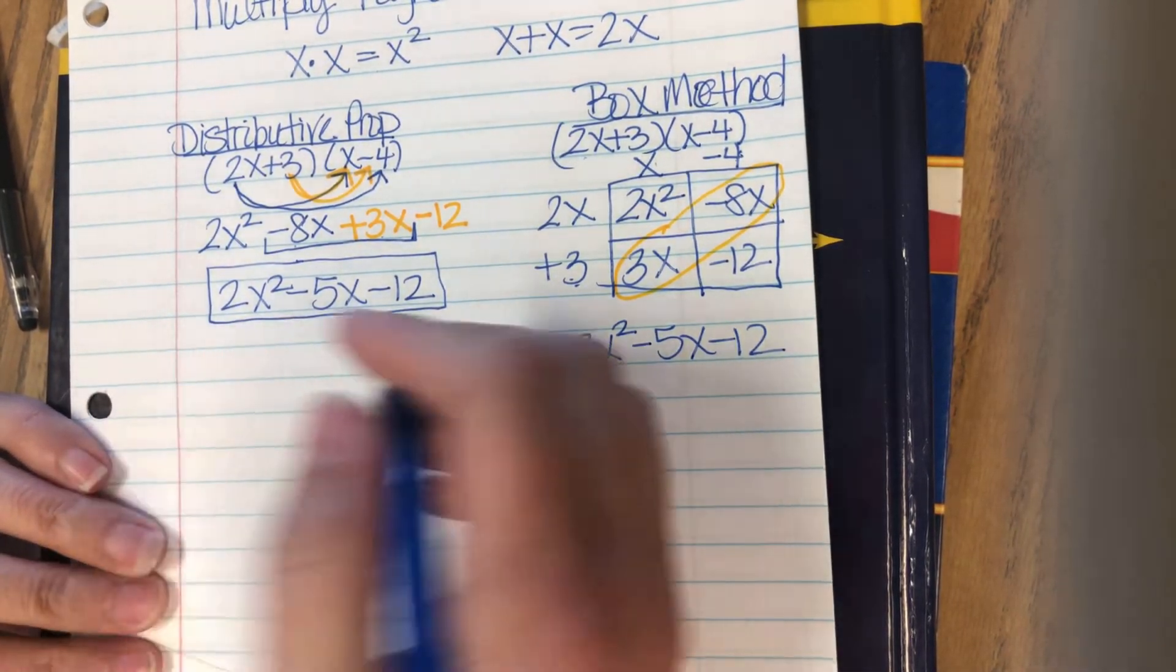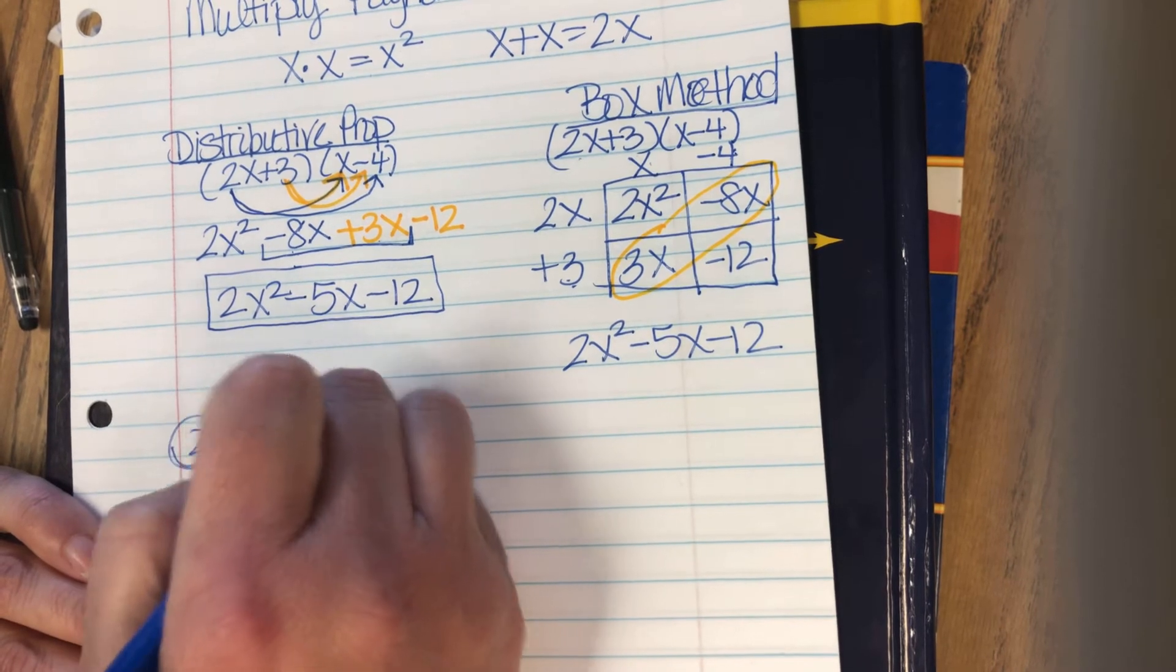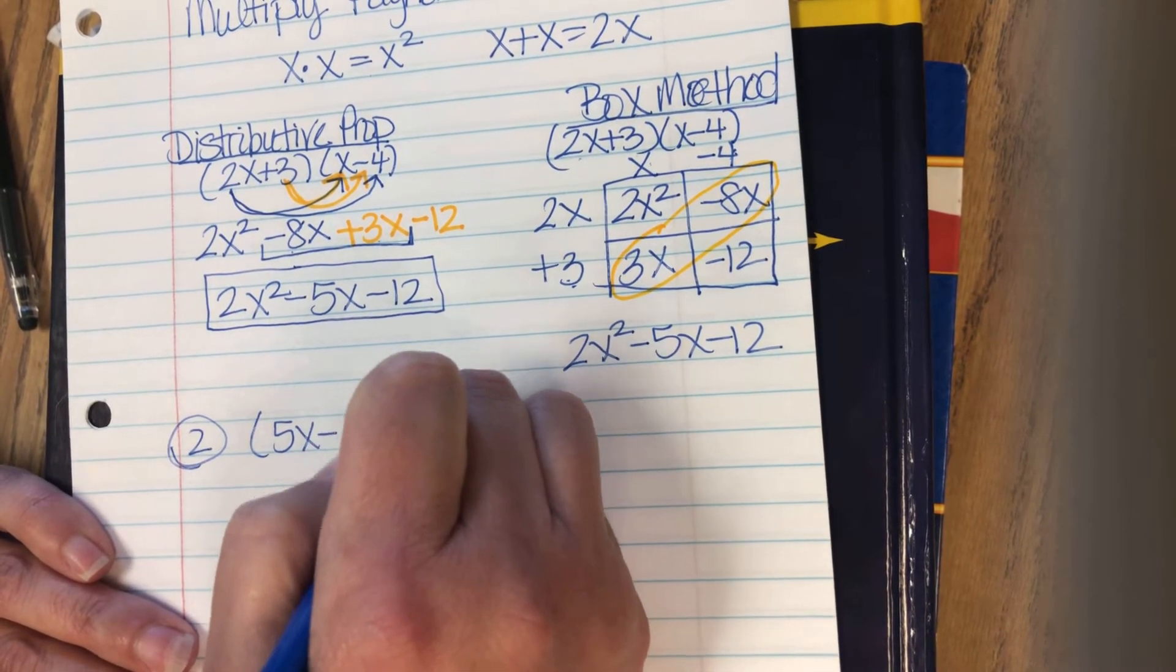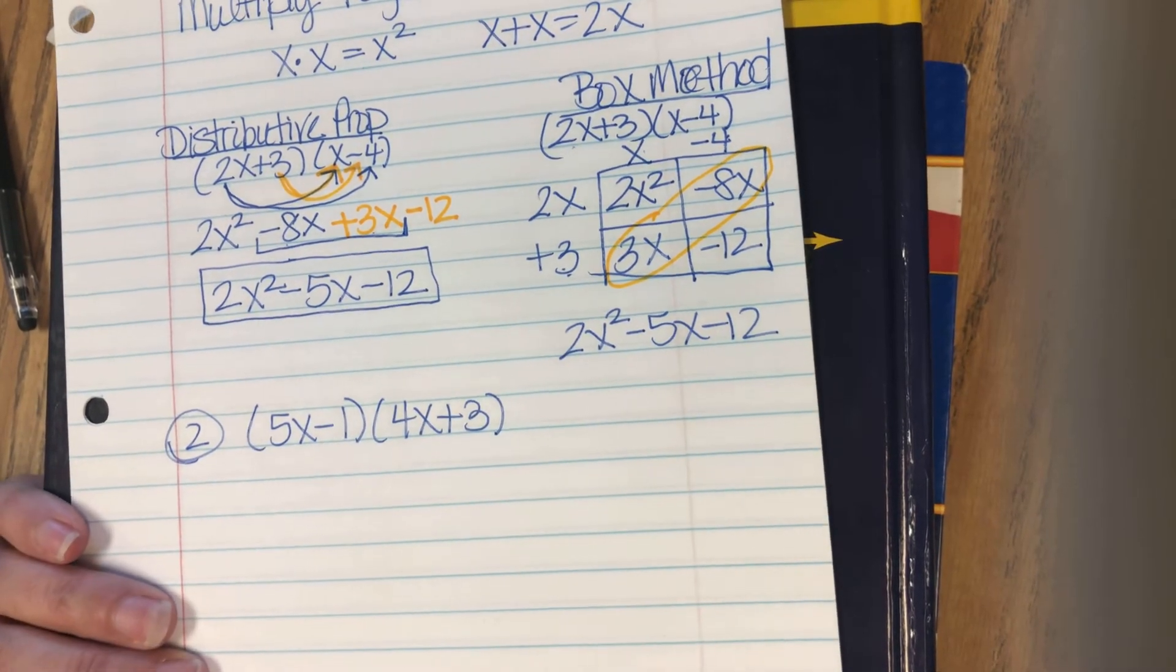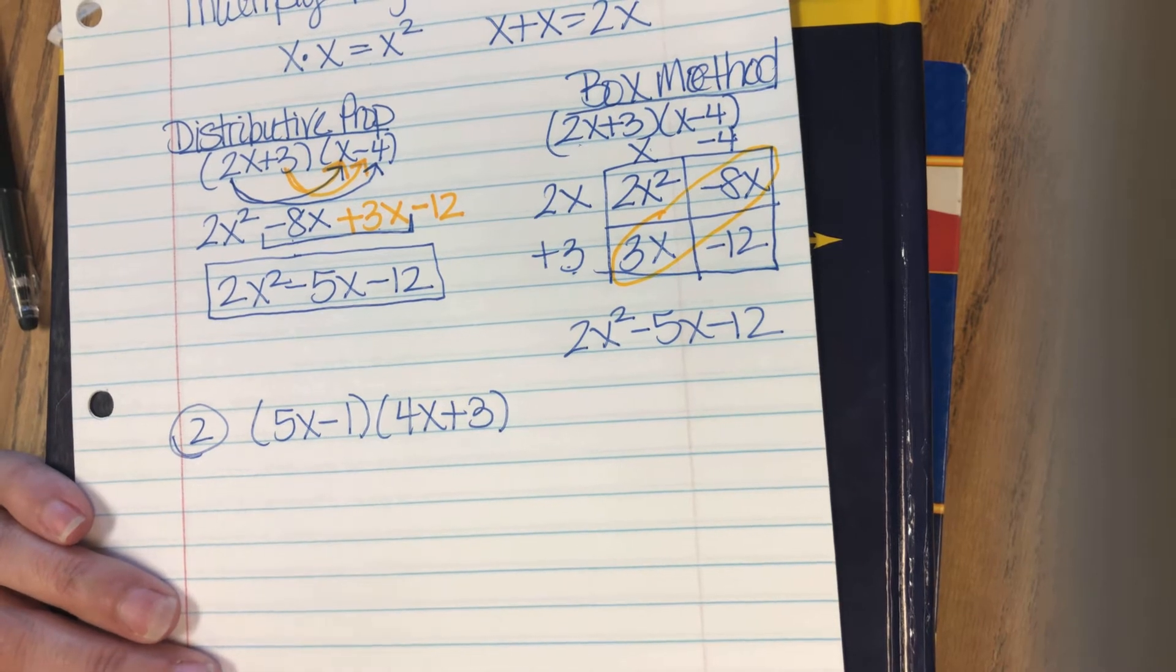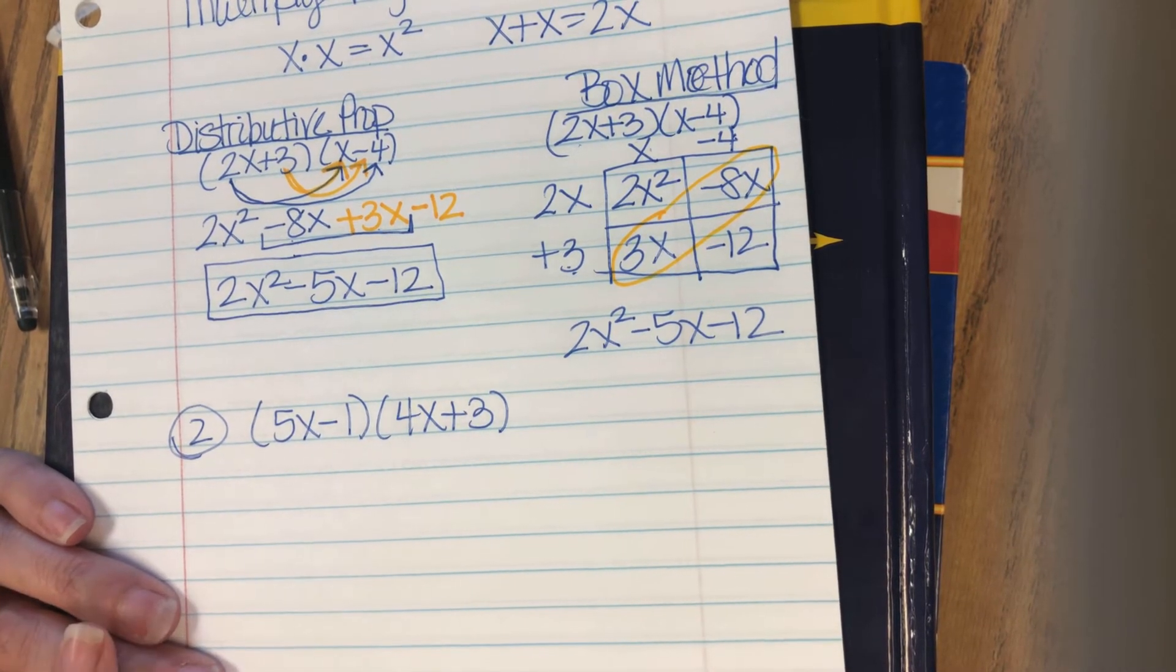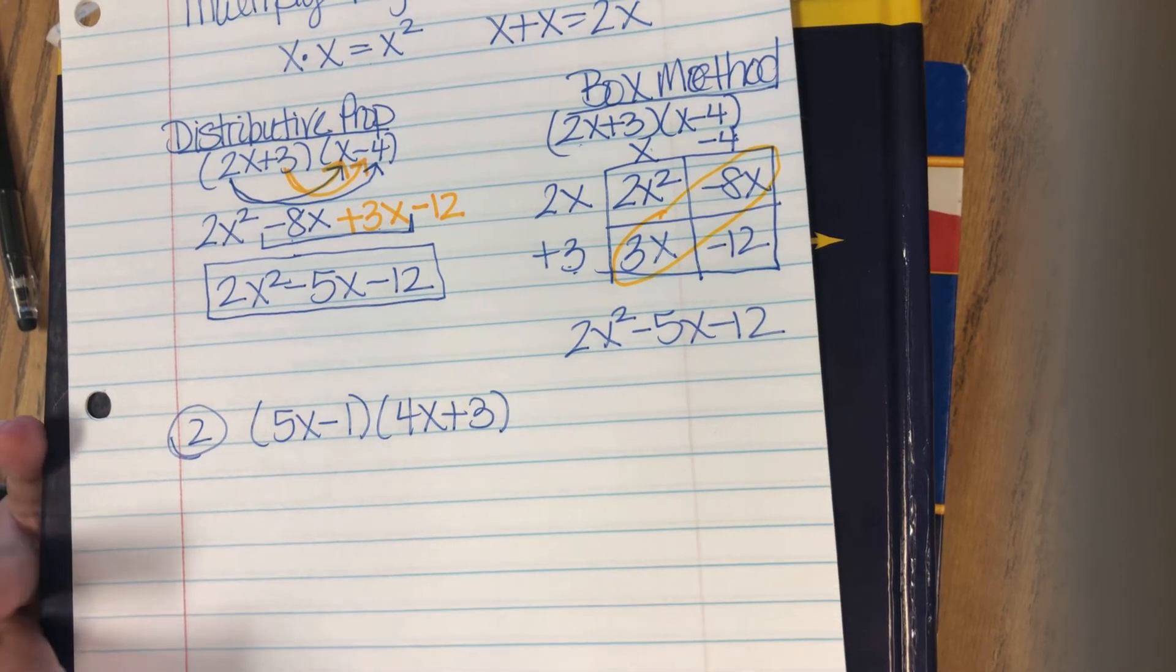Number 2. 5x minus 1 times 4x plus 3. So I'm going to do this one just with the distributive property. If you want to draw the box, then that is perfectly fine. You get the exact same answer.